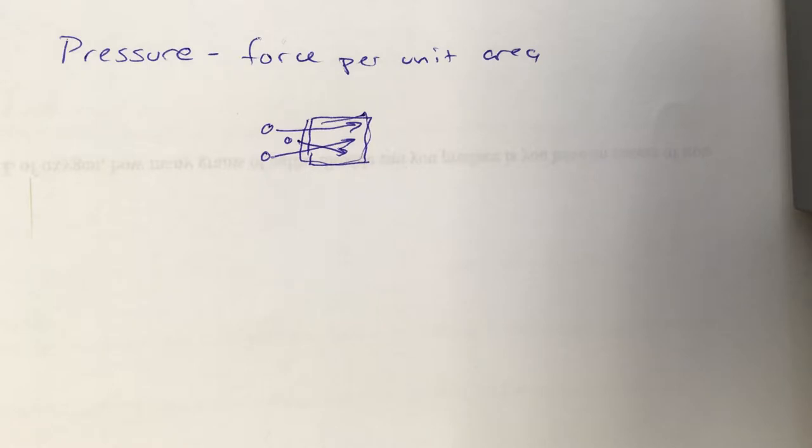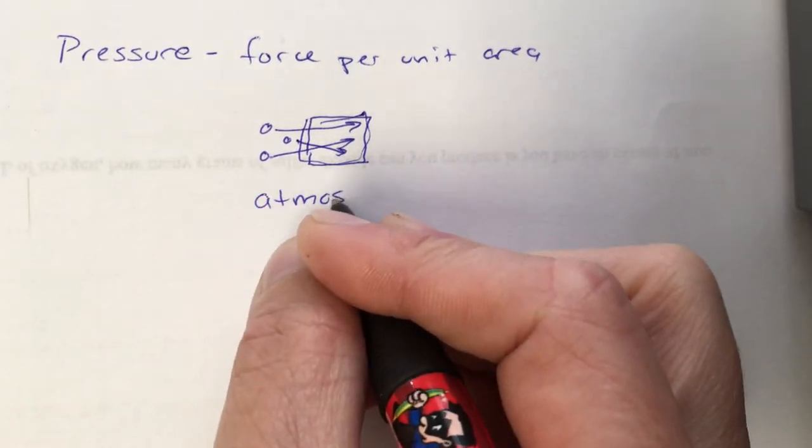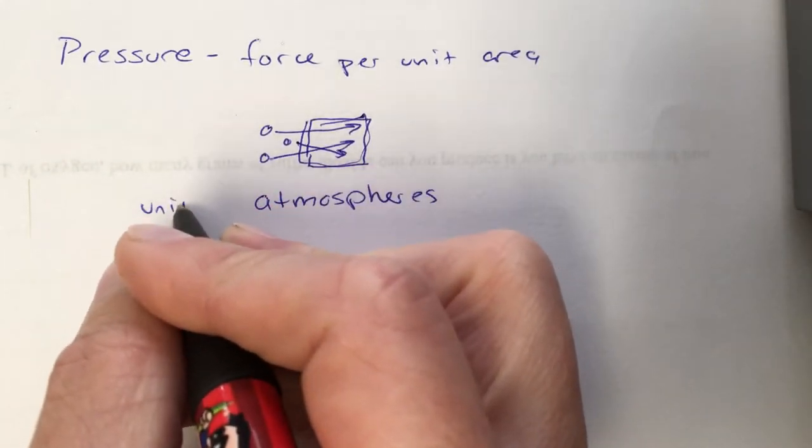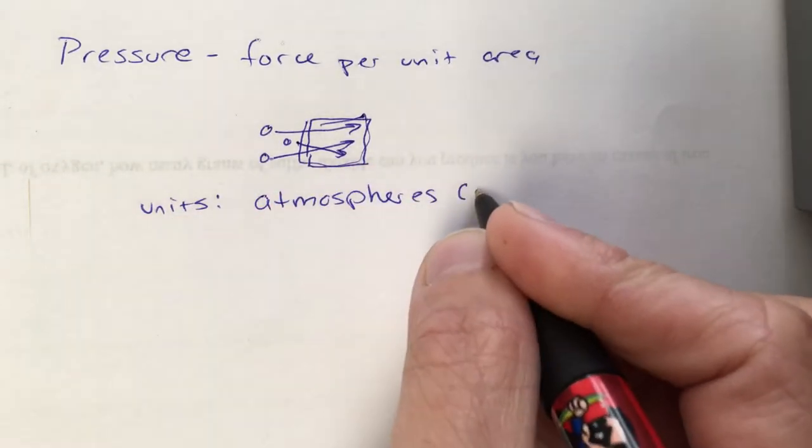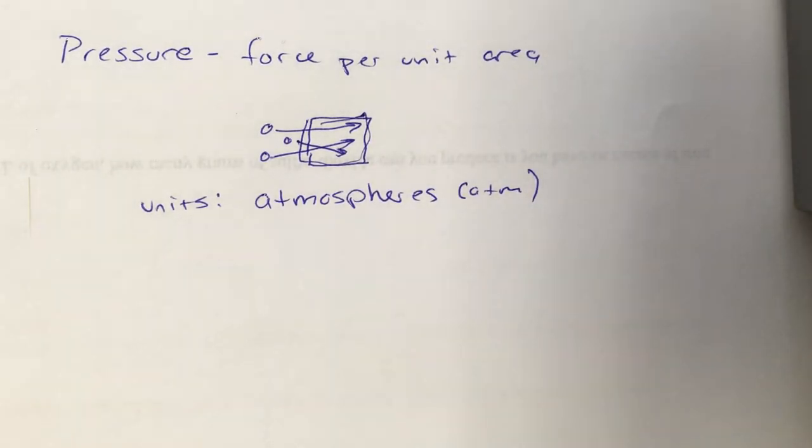We define it as force per unit area. So again, we have this wall of this container here, and we have these gas particles coming at it. And they're going to run into it at various different angles, because again, their motion is random. The combined effect of all that force over this area, that's pressure. We measure pressure in a number of different units. Atmospheres, abbreviated atm, that's one very common unit that we use to measure the pressure of gas. At sea level, the pressure of the air is one atmosphere.